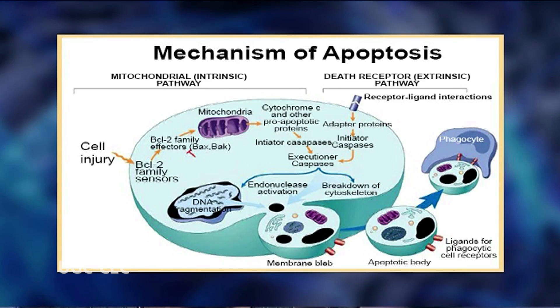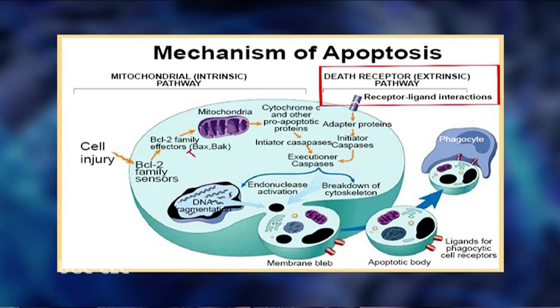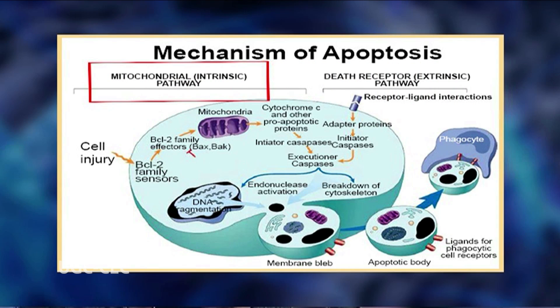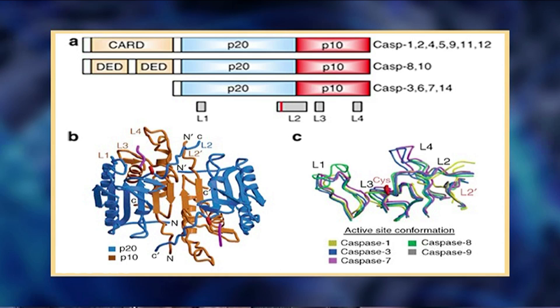External stimuli activate apoptosis by a signaling pathway called the extrinsic pathway, which is distinct from that utilized by internal stimuli, called the intrinsic pathway. There is crosstalk between these pathways, and extracellular apoptotic signals can cause activation of the intrinsic pathway.